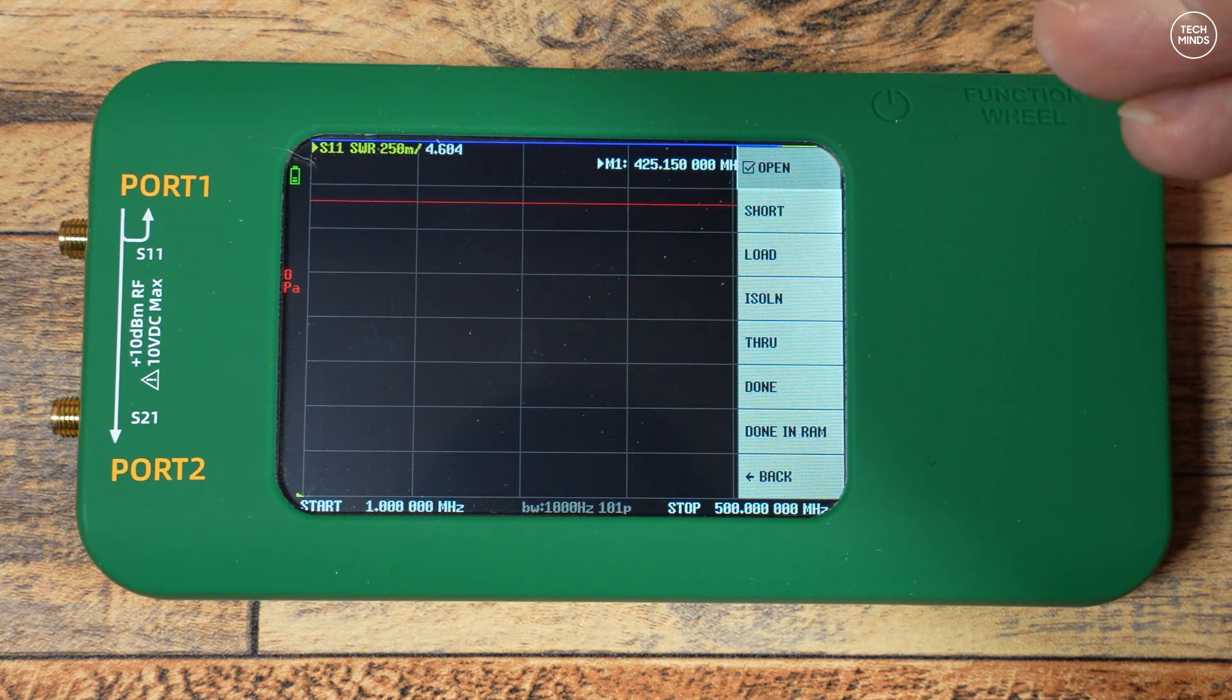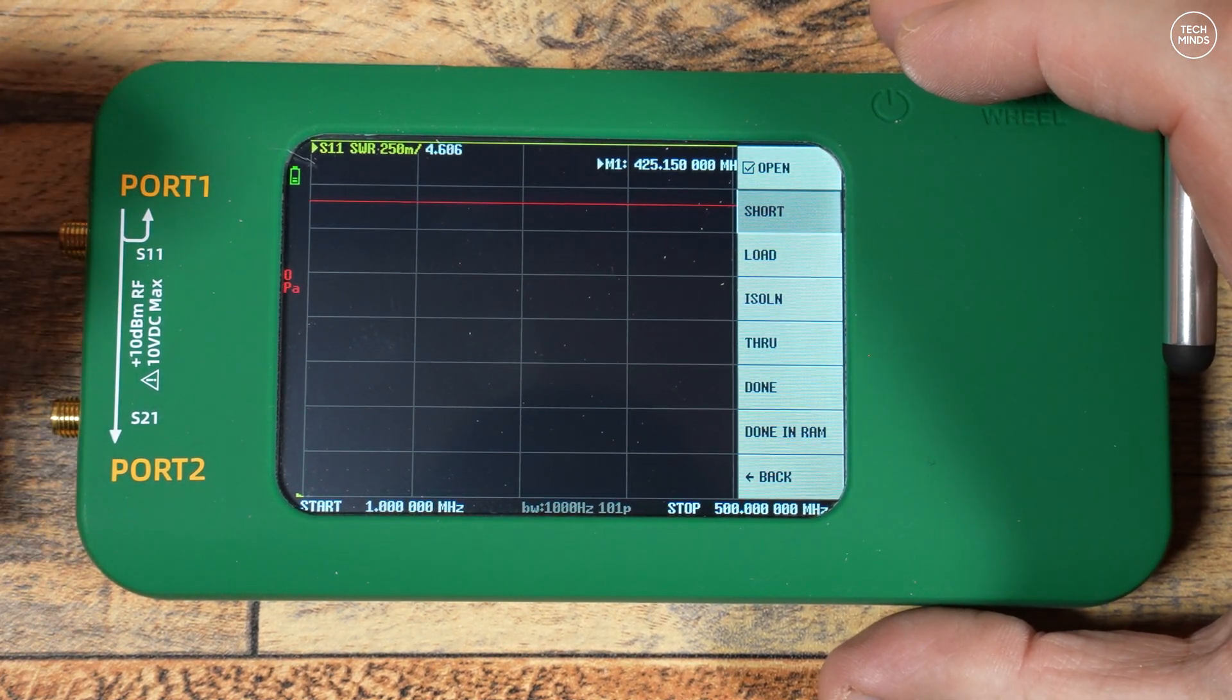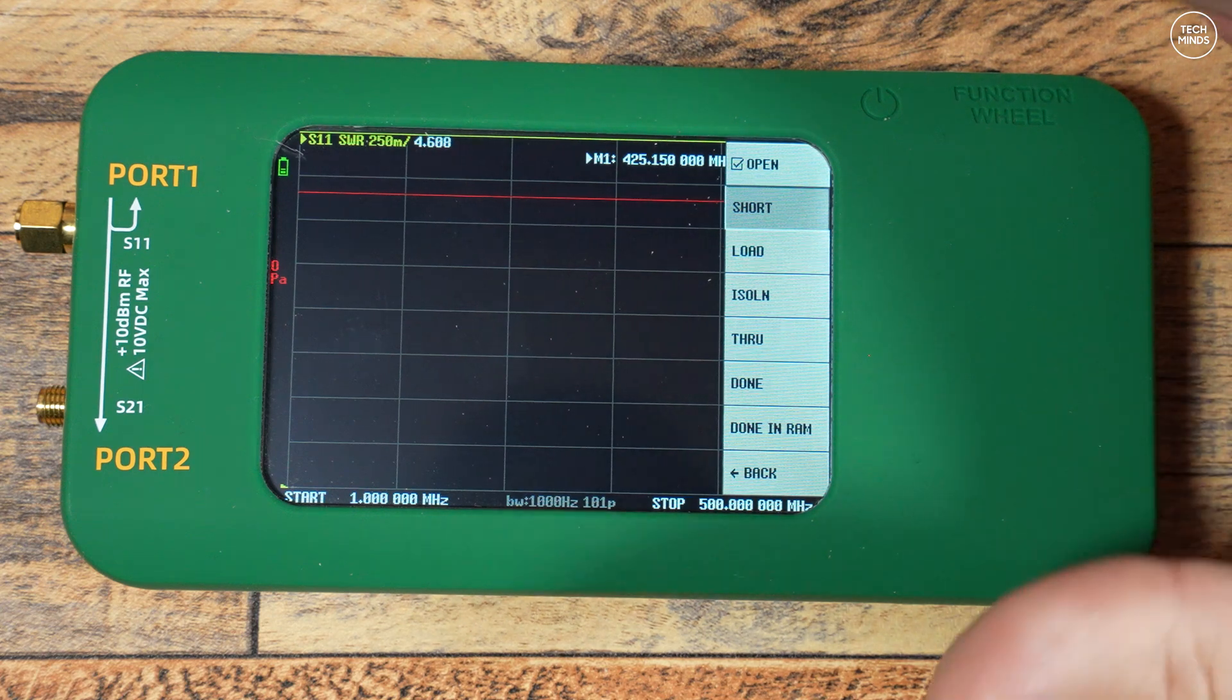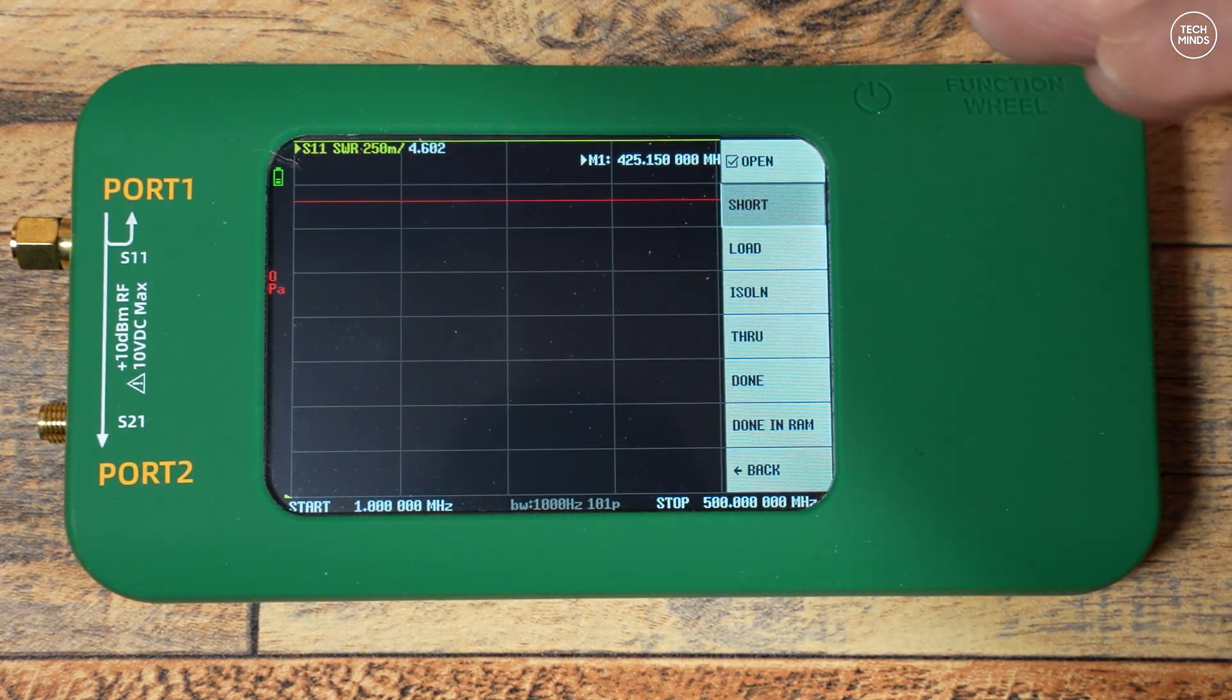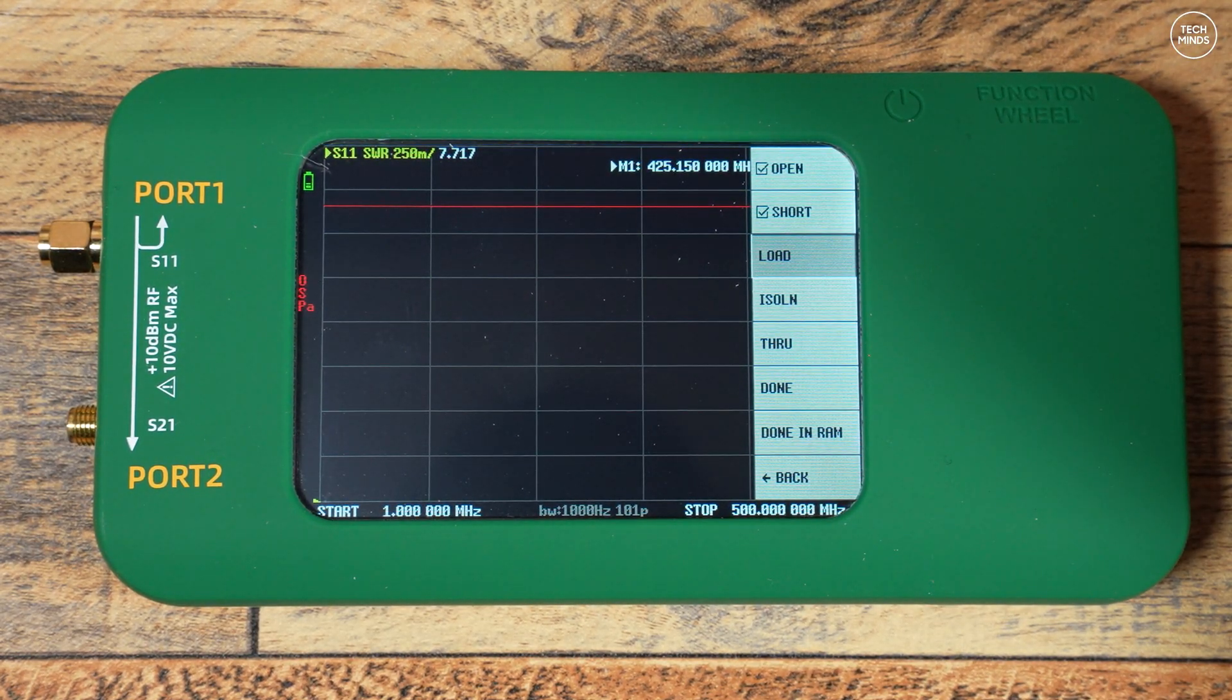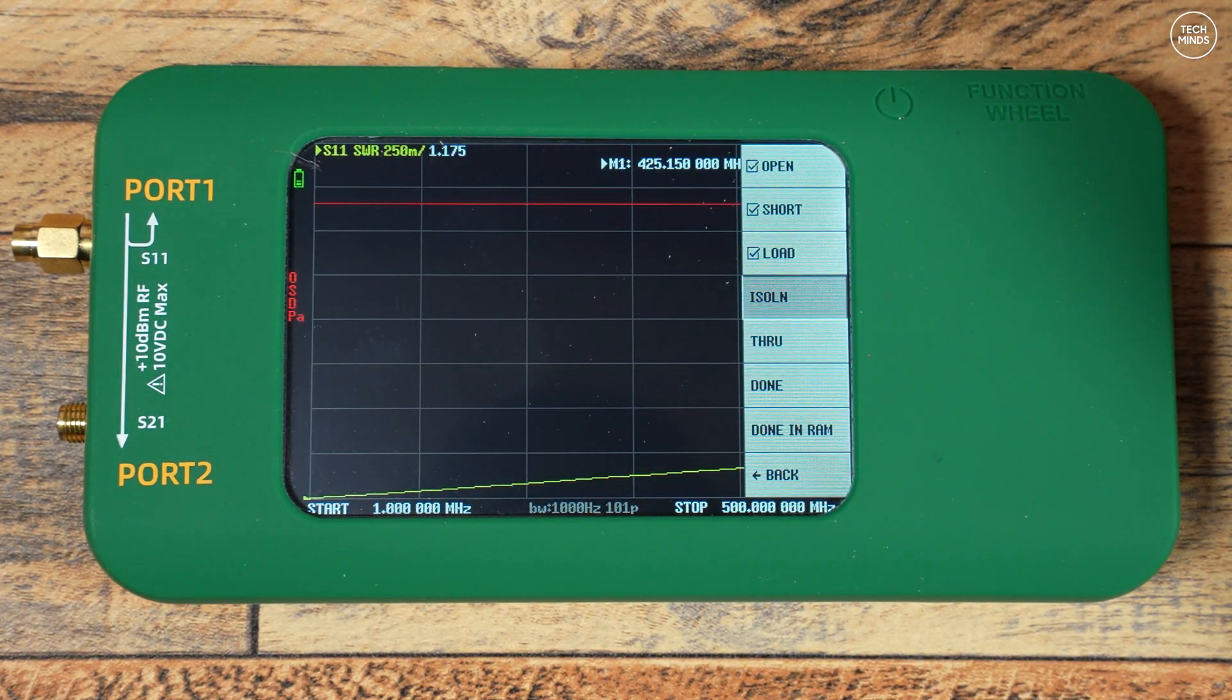Let's quickly do the calibration and then I'll test an antenna using the SWR measurement feature of this VNA. Now we're in the calibration screen and now we need to attach the open SMA plug to S11. We then press the open button. Once that's done we then connect the short SMA plug and then press short. We then attach the load SMA plug and press load.